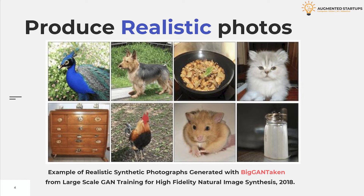It was discovered that instability is specific to large-scale GANs, and they were characterized empirically. Leveraging insights from this analysis, it was demonstrated that a combination of novel and existing techniques can reduce this instability. However, complete training stability can only be achieved at a dramatic cost to performance. It was found that stability does not come solely from the generator or discriminator, but from their interaction through the adversarial training process. While symptoms of poor conditioning can track and identify instability, ensuring reasonable conditioning proves necessary for training but insufficient to prevent eventual training collapse.